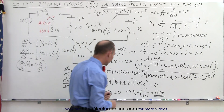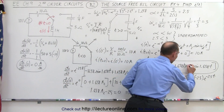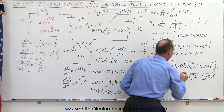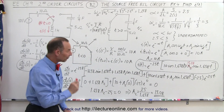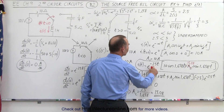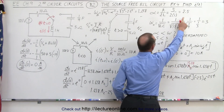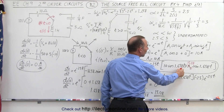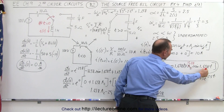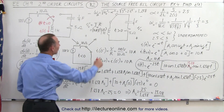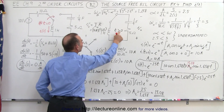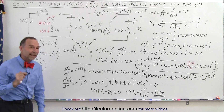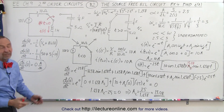Finally, replacing a2 with 15.08, the complete equation for the current as a function of time is: i(t) equals e to the minus 2.5t times 10 times the cosine of 1.658t, plus 15.08 times the sine of 1.658t. This is the current in the circuit after time greater than zero, when the switch moved to its new position. That is how we find the solution.